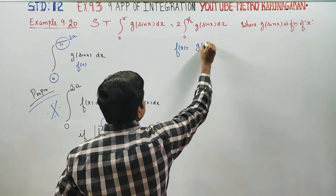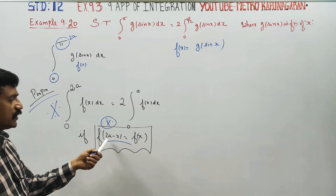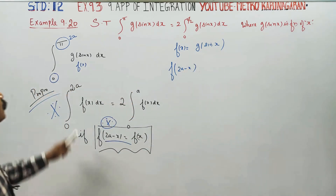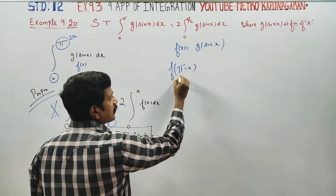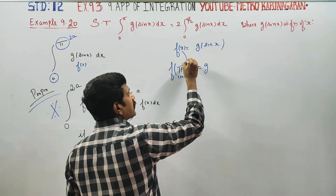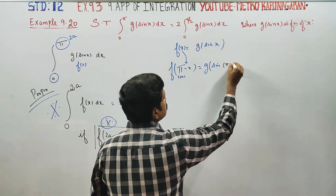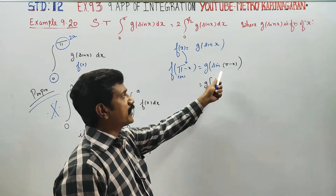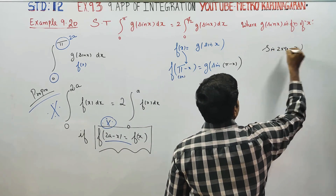Here f(x) corresponds to g of sin x. Just substitute f of 2a minus x. Here 2a equals pi, so we get f of pi minus x, which gives us g of sin(pi minus x).